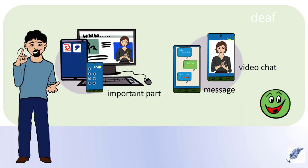John says: computers, tablets and smartphones are an important part of my communication. On social media, I can connect to and interact with friends, whether it is just by writing someone a quick message or joining a video chat.